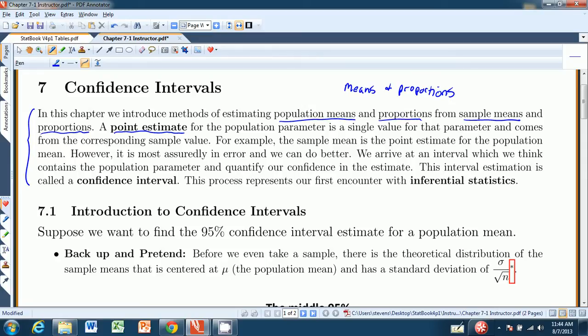The problem is the point estimates are no doubt wrong, right? They are most assuredly in error in the sense that if you get a sample mean, that's probably not equal to the population mean. So we do a little better than that, and we create an interval in which we think the population mean or proportion exists. And then we quantify our confidence in that interval. How confident are we that the actual population parameter, such as the mean or proportion, lies within the interval we quoted?